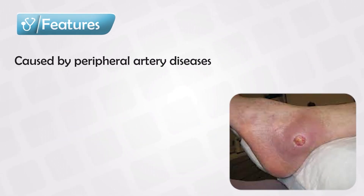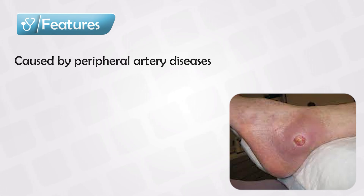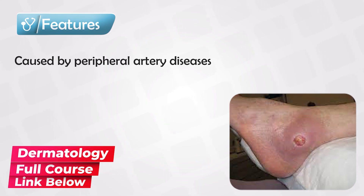Arterial ulcers are seen in patients with peripheral artery diseases, such as atherosclerosis. Basically, you cut off or minimize the blood supply to a distant organ. Normally, whenever we're walking, we're constantly bumping our toes together or having uneven pressure in the foot. But because the foot is well supplied with blood, it can easily heal any small injuries before they progress.